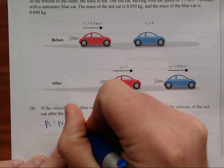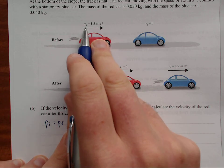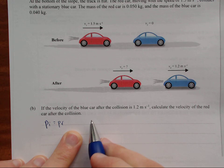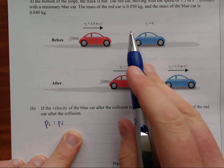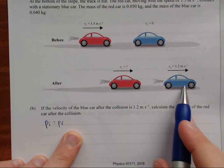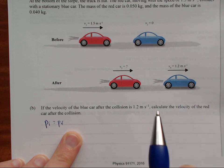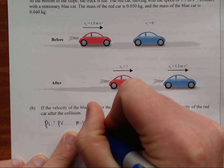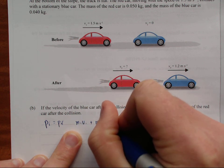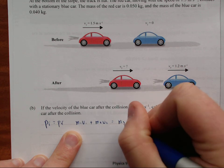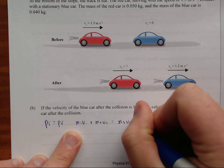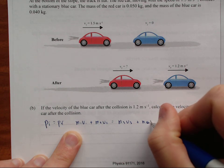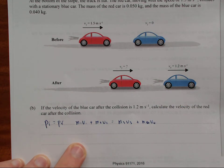So our initial momentum is equal to the final momentum. You'll notice the 1s and the 2s. So everything with a 1 on it, all my subscripts with 1 are going to be this car here and this car here. So M1V1 plus M2V2 is equal to M3V3 plus M4V4.